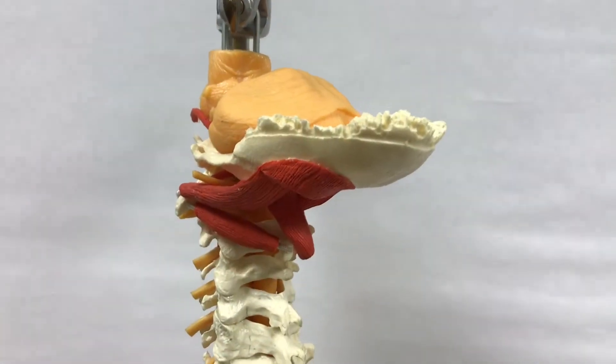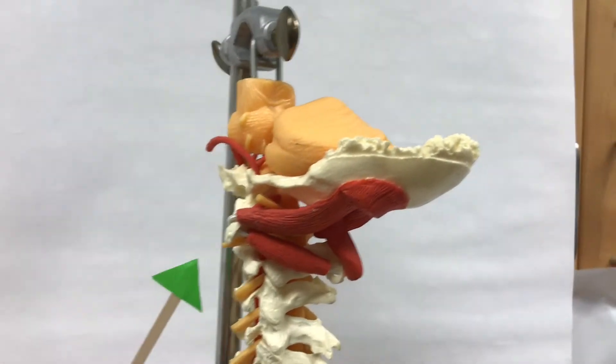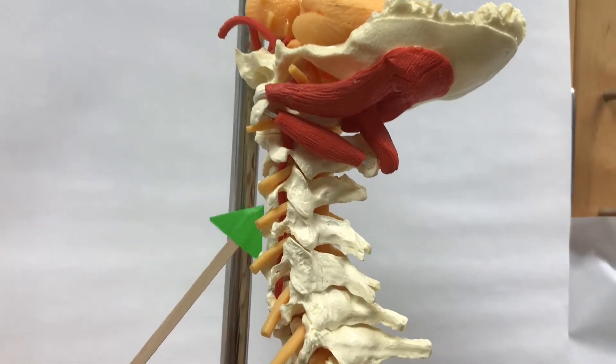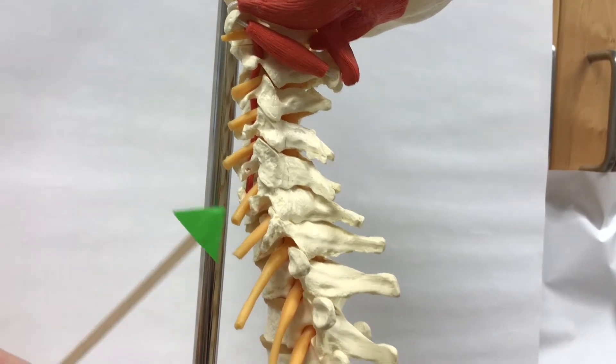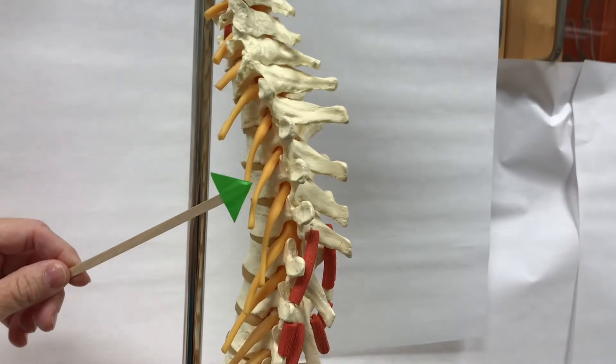This is a vertical representation of the spinal cord. You can see the vertebrae are stacked on top of each other. We have the cervical vertebrae up here, then the thoracic vertebrae, and then lumbar.